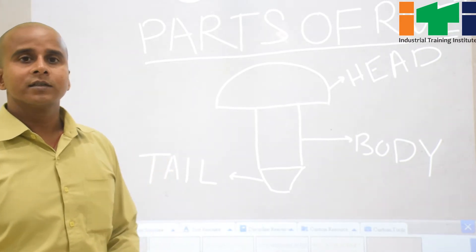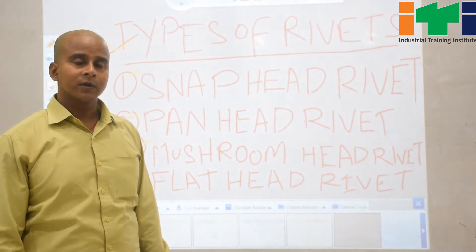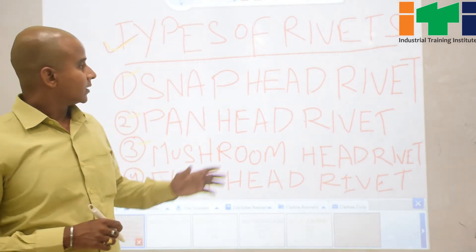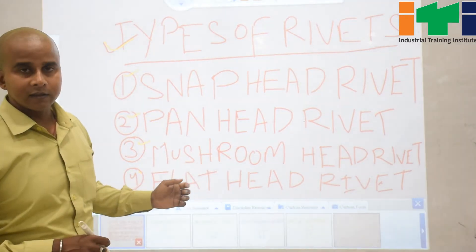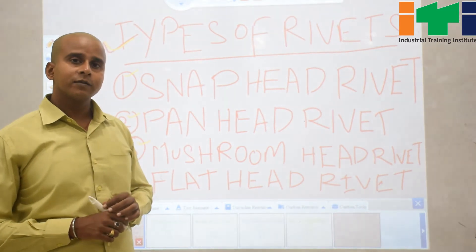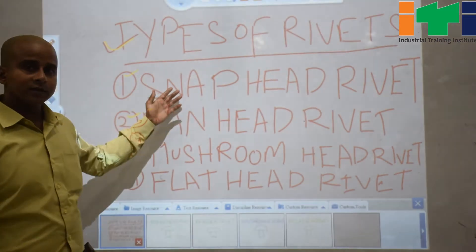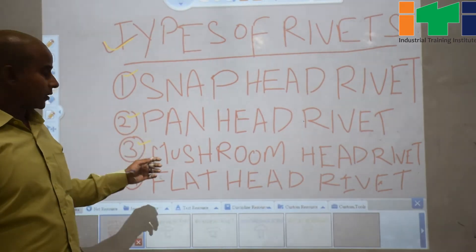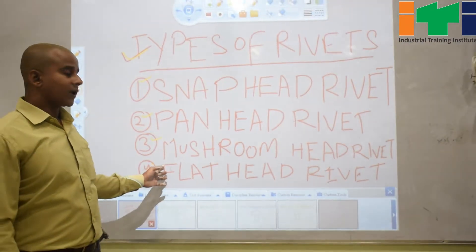Now we discuss about types of rivets. According to the head, rivets are classified into four types: first is snap head rivet, second is pan head rivet, third is mushroom head rivet, and fourth is flat head rivet.